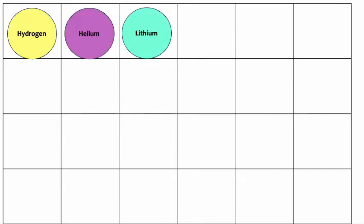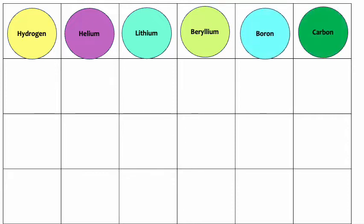What are the chemical symbols of the following elements? Hydrogen, Helium, Lithium, Beryllium, Boron, Carbon, Nitrogen, Oxygen, Fluorine,